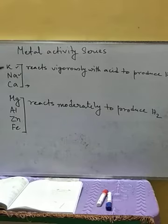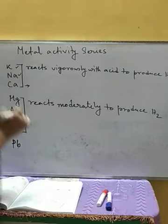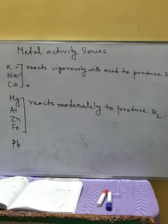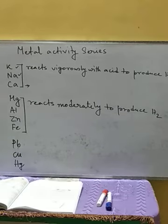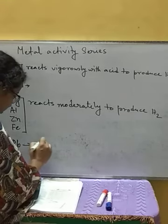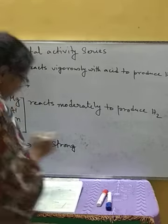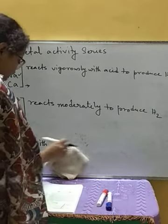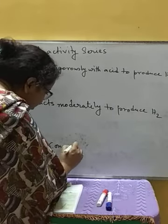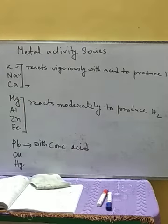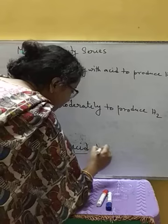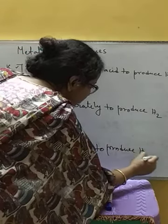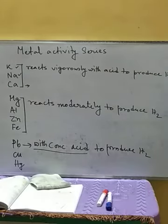Next we have lead. Lead reacts with concentrated acid to produce hydrogen gas. Whereas copper and mercury — after lead we have copper and mercury — these two will not react with acid.